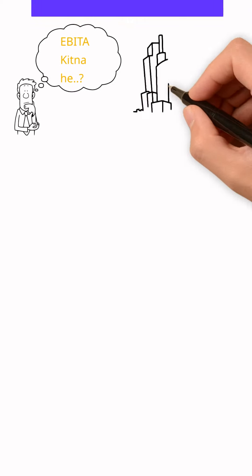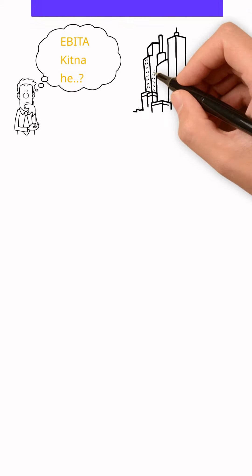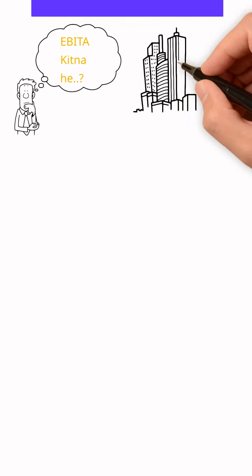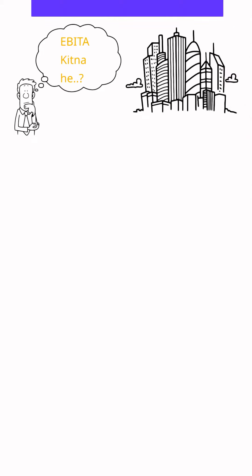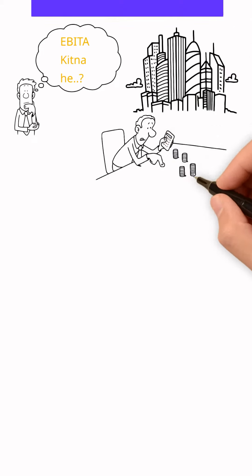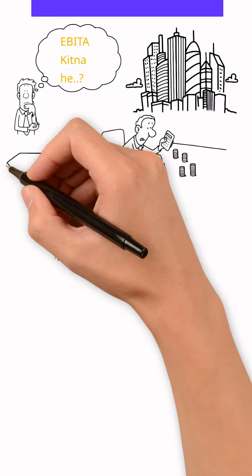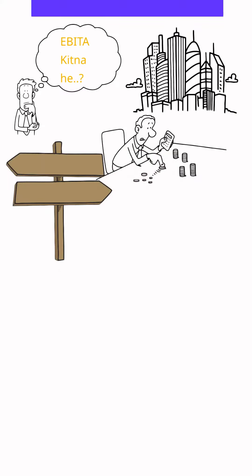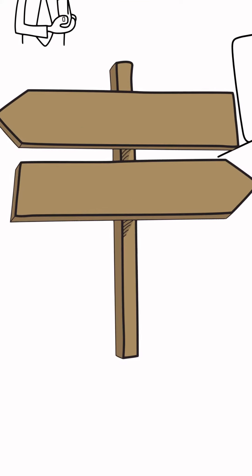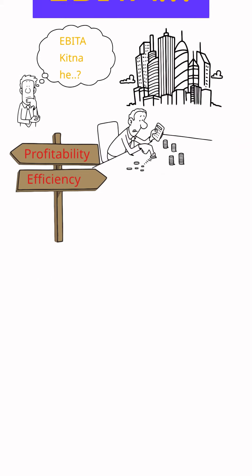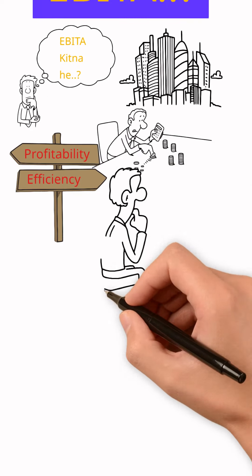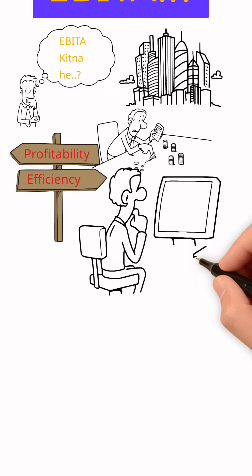EBITDA is an acronym that refers to the earnings of a company before interest, tax, depreciation, and amortization expenses. It is an indicator used to measure the profitability and efficiency of a company and compare it with similar companies.